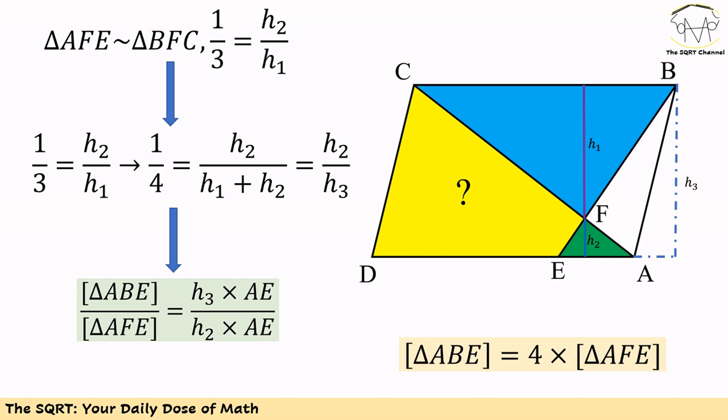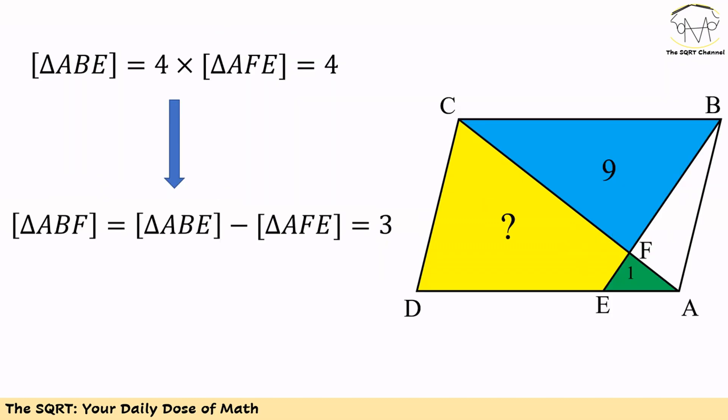The area of the green triangle equals H2 times AE. On the other hand, for triangle ABE, the area equals H3 times AE. Since H3/H2 = 4, the area of ABE equals 4 times the area of AFE. Since the area of AFE is 1, the area of ABF equals 4 minus 1, which is 3. So the white triangle has area 3.